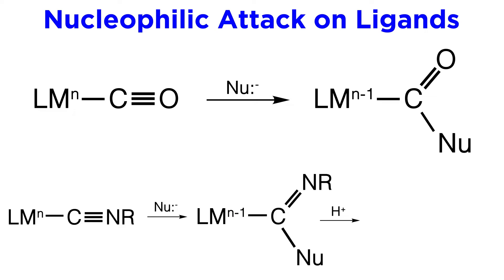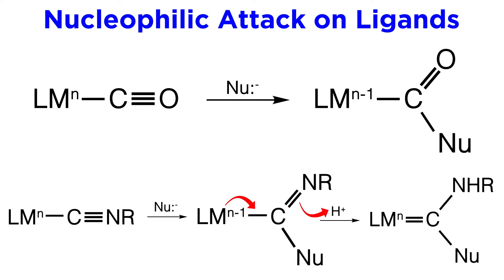From here, if there is a source of acidic protons, the metal can actually provide another bond to the carbon, allowing this pi bond to pick up the proton, leaving us with this amino group. So as you can see, a ligand can change quite a bit as the result of nucleophilic attack.